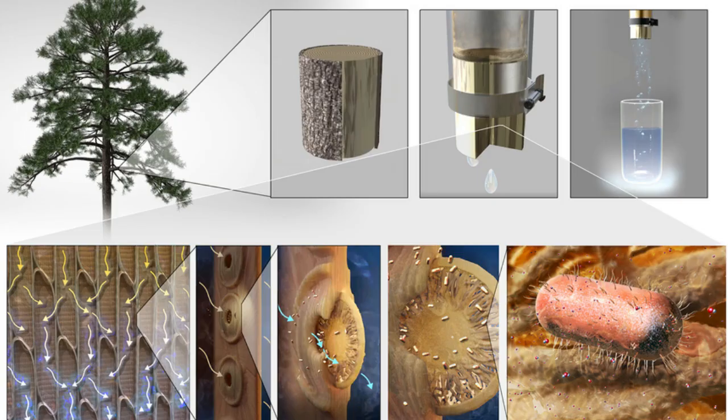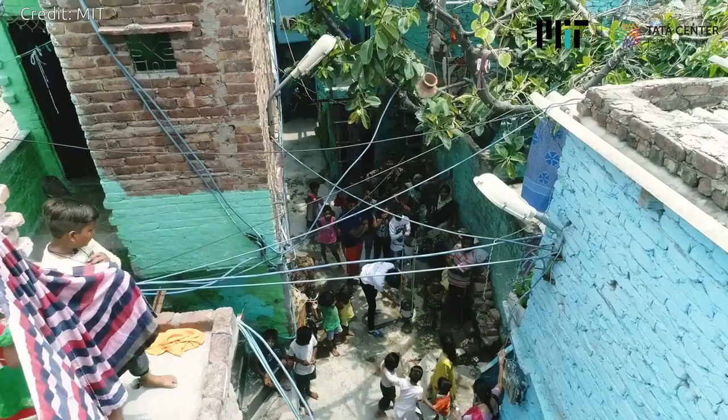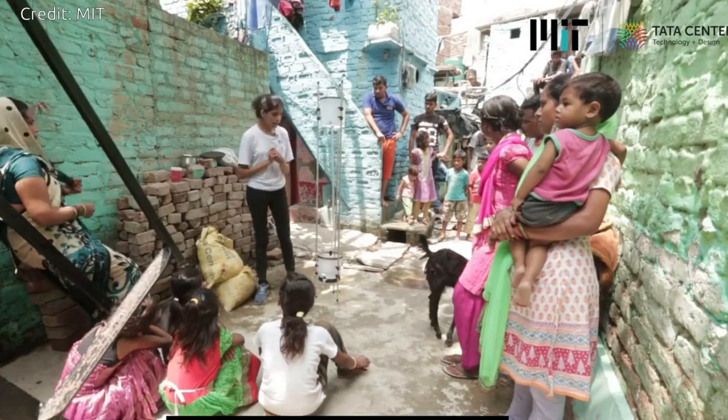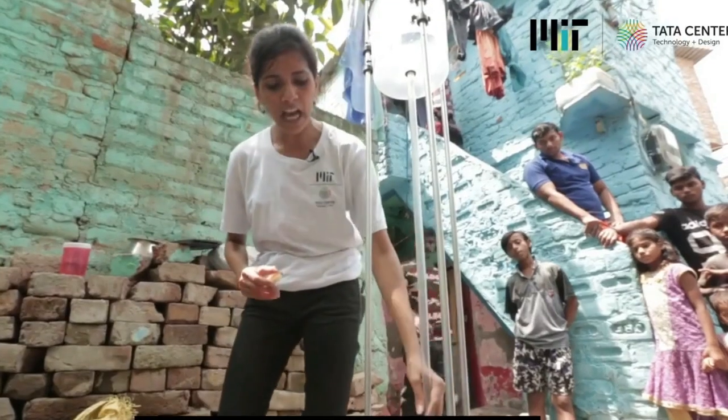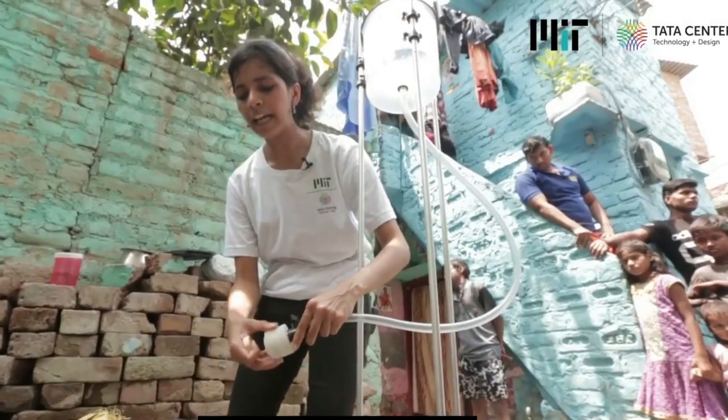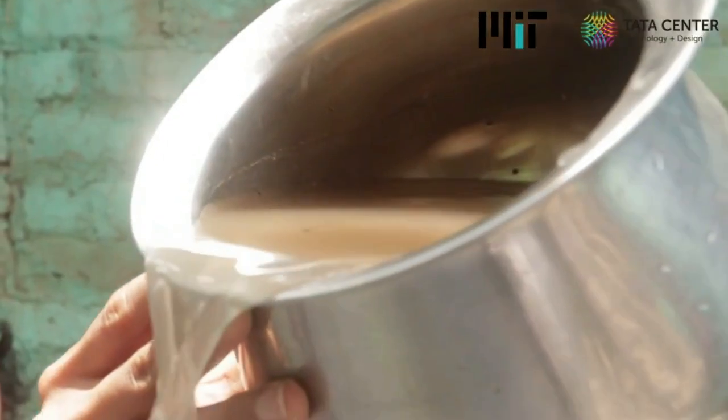The researchers took their techniques to India, where they made xylem filters from native trees and tested the filters with local users. Based on their feedback, the team developed a prototype of a simple filtration system fitted with replaceable xylem filters that purified water at a rate of one liter per hour.